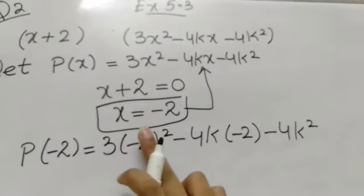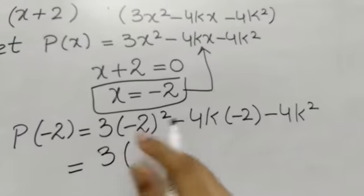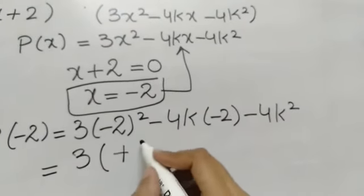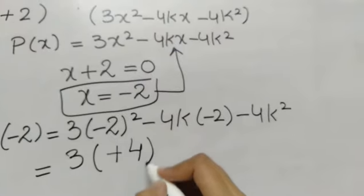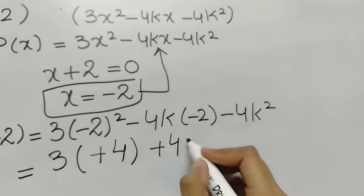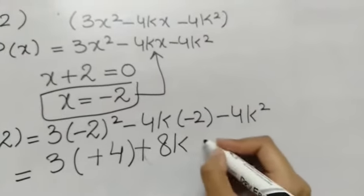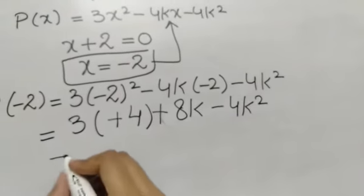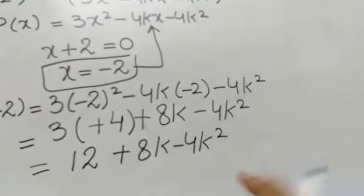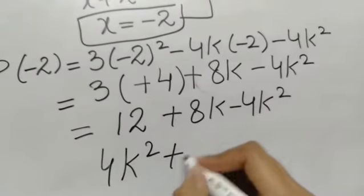We have put our value of x in the polynomial. Now we will solve it. Minus squared is plus — when we take the square of minus 2, it is plus 4. Minus times minus is plus, so it will be plus 8k minus 4k squared. Then 3 times 4 is 12, giving us 12 plus 8k minus 4k squared.